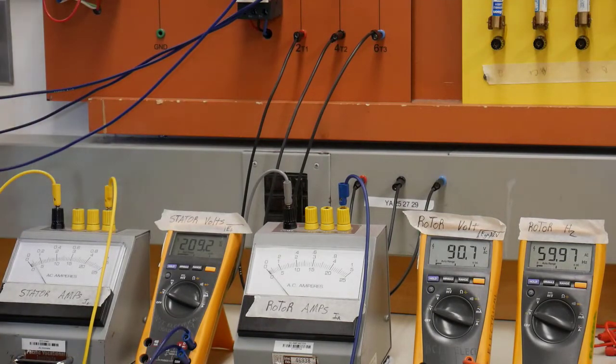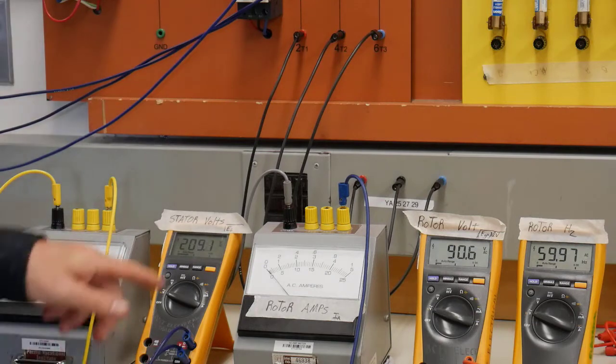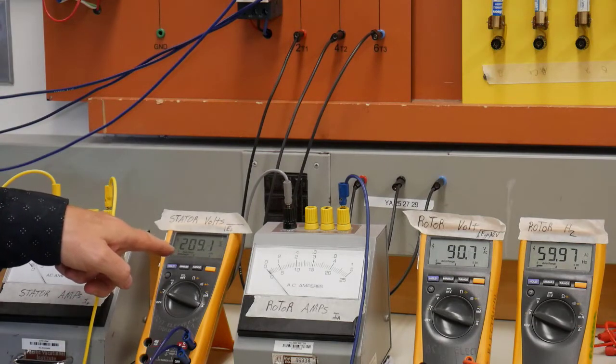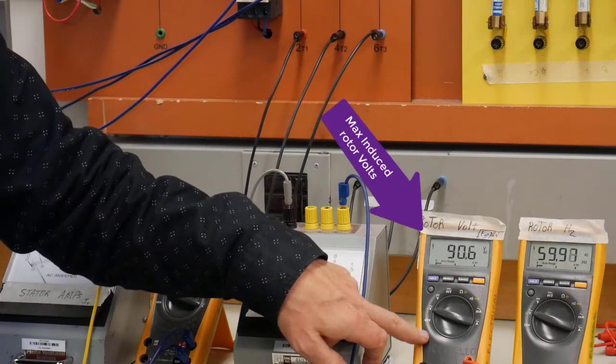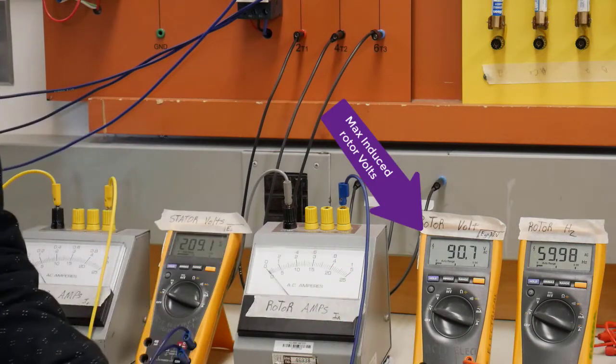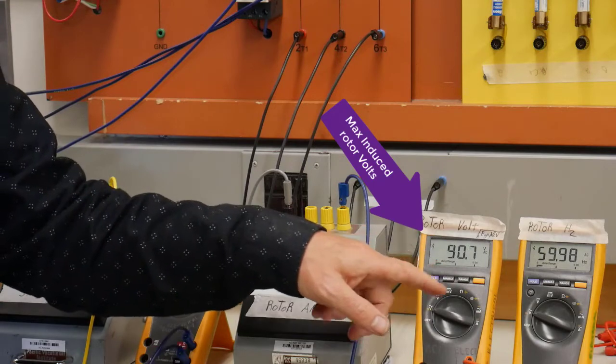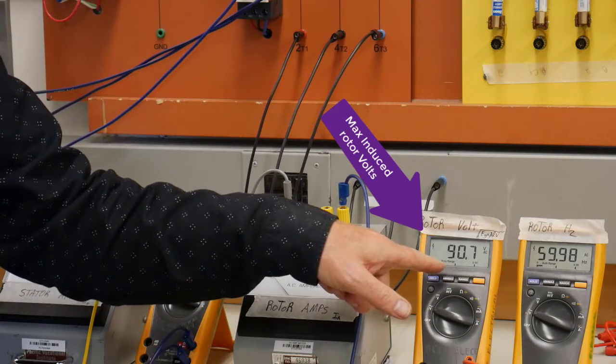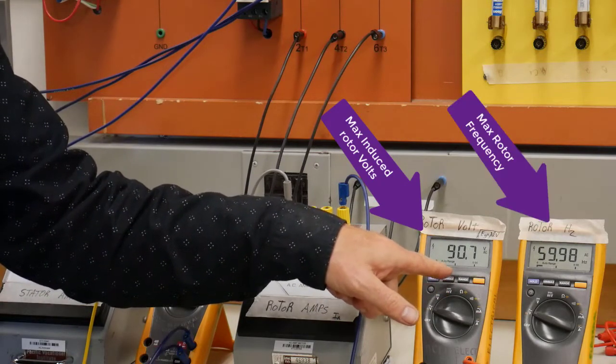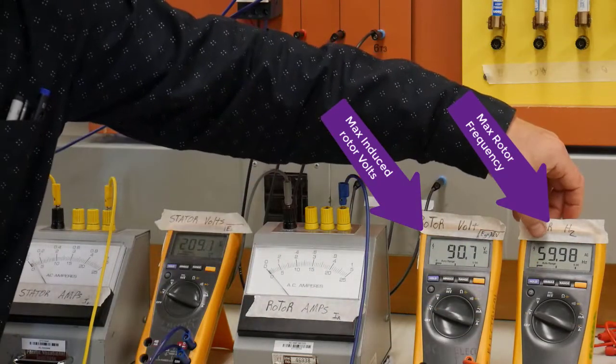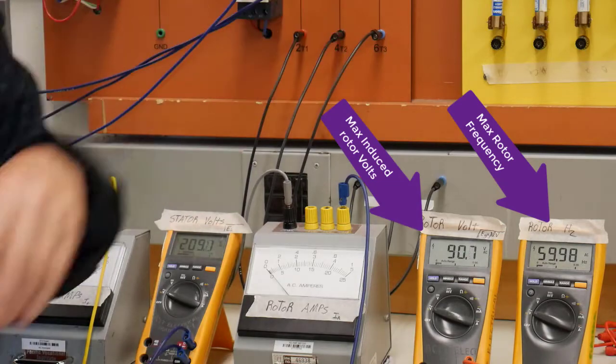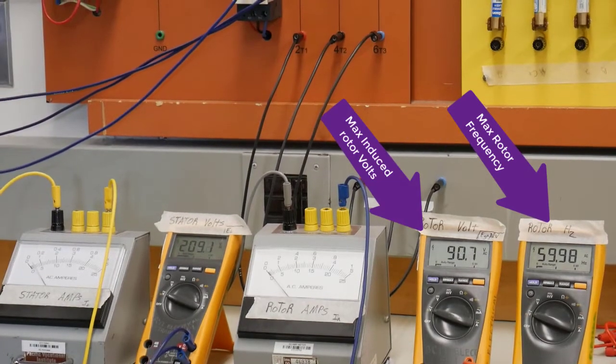The main contactor supplying power to the stator is energized. We've got 209 volts. Our rotor, because there's no closed circuit and it's not rotating, acts as a transformer with 90 volts across the rotor lines and the frequency is the same as supply frequency: 59.98, essentially 60 hertz.